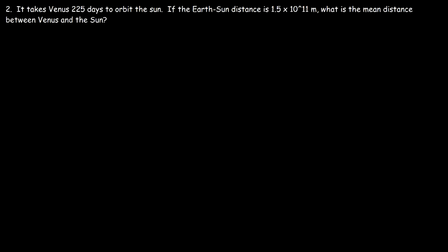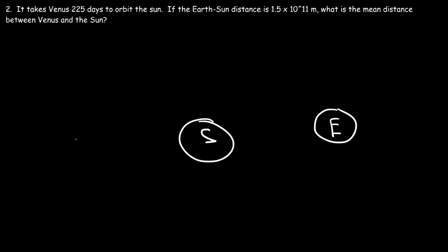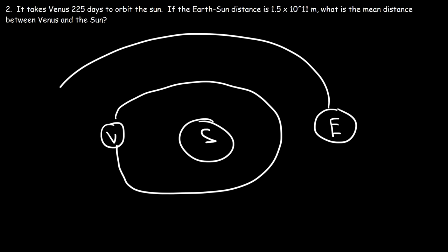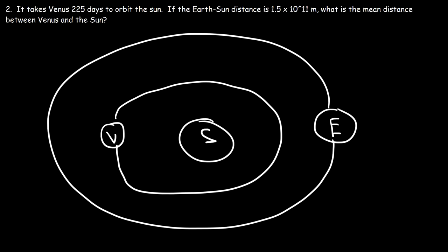It takes Venus 225 days to orbit the Sun. If the Earth-Sun distance is 1.5×10¹¹ meters, what is the mean distance between Venus and the Sun? Venus is in a closer orbit to the Sun than the Earth, and it takes Venus only 225 days compared to Earth's 365 days because it's closer.